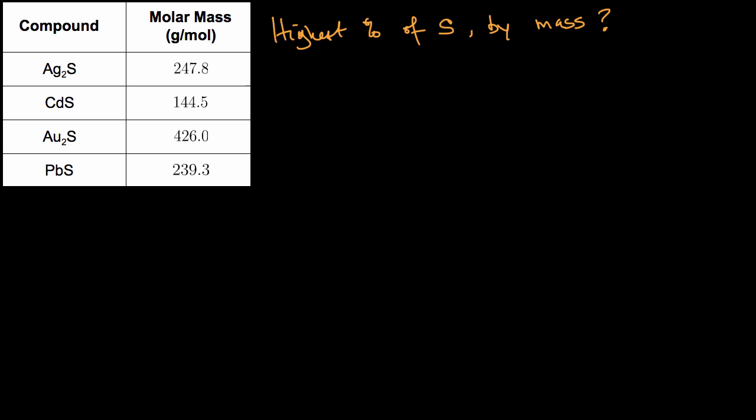All right, now one way to approach this is to say for each of these compounds, if we say per mole of each compound, we could figure out what is the mass of sulfur divided by the total mass of the compound.